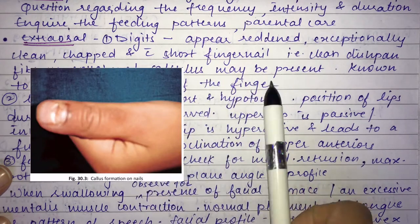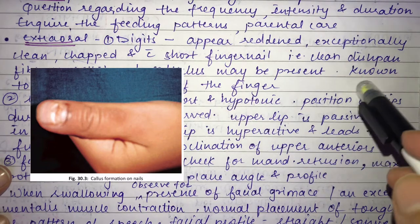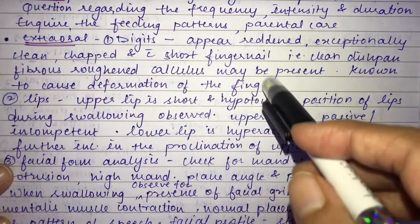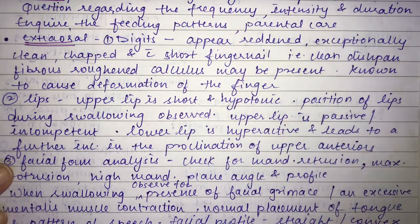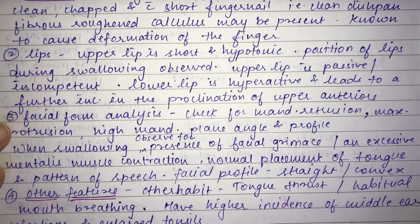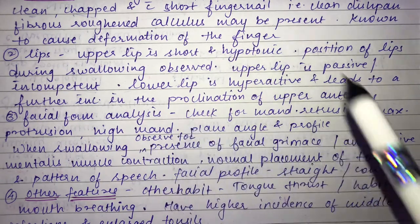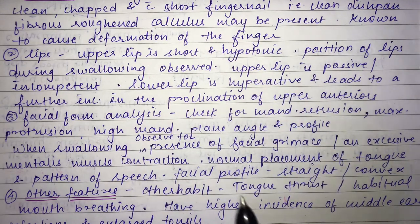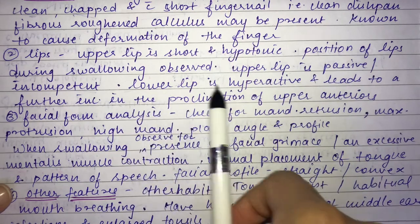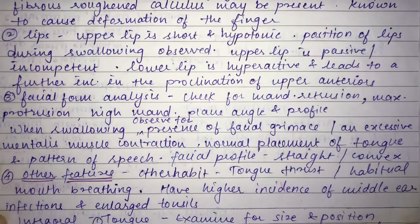Extraorally, calculus formation on the nails may cause deformation of the finger. The upper lip is short and hypotonic, and appears passive or incompetent — meaning it does not contact the lower lip at rest. The lower lip is hyperactive, leading to further increase in proclination of the upper anteriors. Facial form analysis reveals mandibular retrusion, maxillary protrusion, high mandibular plane angle, and a convex profile.